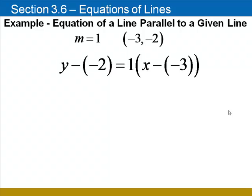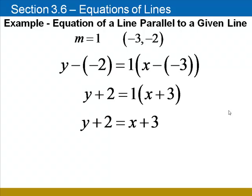Recall that subtracting a negative value is the same as adding a positive value, so we rewrite the left side as y plus 2 and the expression in parenthesis on the right side as x plus 3. Now we can distribute the 1 and solve for y by subtracting 2 from both sides. The line that's parallel to that given line, passing through (-3, -2), is y equals x plus 1.